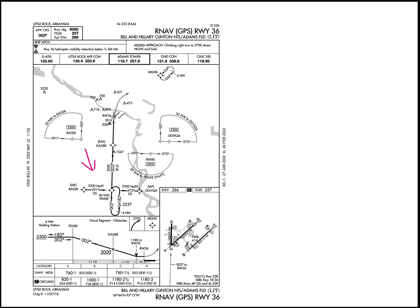Let's try this another way. Let's assume we're coming from the northwest, where we're going to have to do the hold in lieu of a procedure turn. When you get to Phexi, you're going to fly over it before you start your hold entry course and course reversal. You know this as a pilot, but it's not depicted that way — because you can see how that might cause confusion, since it serves multiple purposes. The missed approach point and missed approach holding waypoint have the same issue we just discussed.